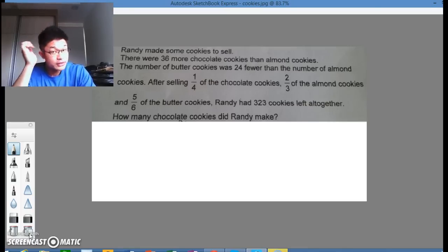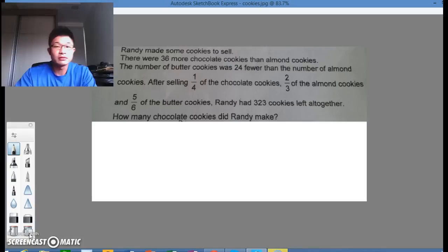Randy made some cookies to sell. There were 36 more chocolate cookies than almond cookies. The number of butter cookies was 24 fewer than the number of almond cookies. After selling one quarter of the chocolates, two-thirds of the almonds and five-sixths of the butter cookies, Randy had 323 cookies left altogether. So how many cookies did Randy make?